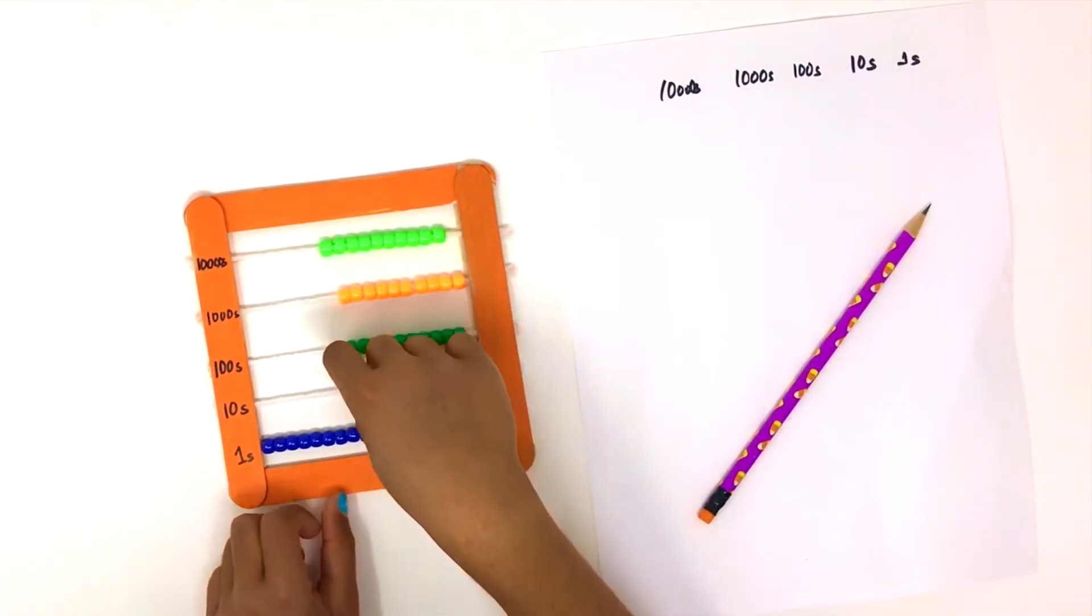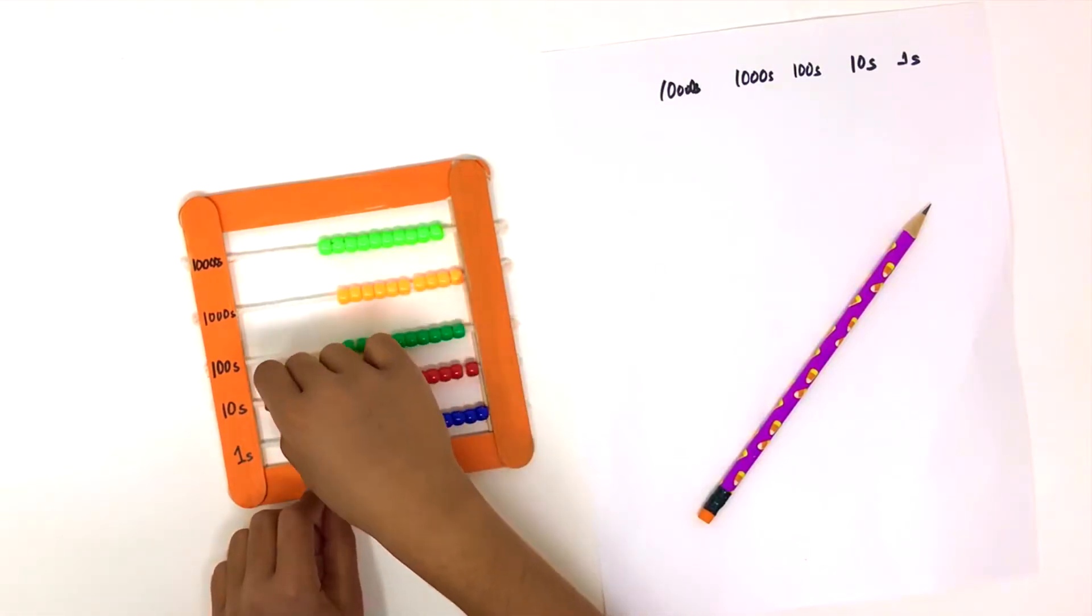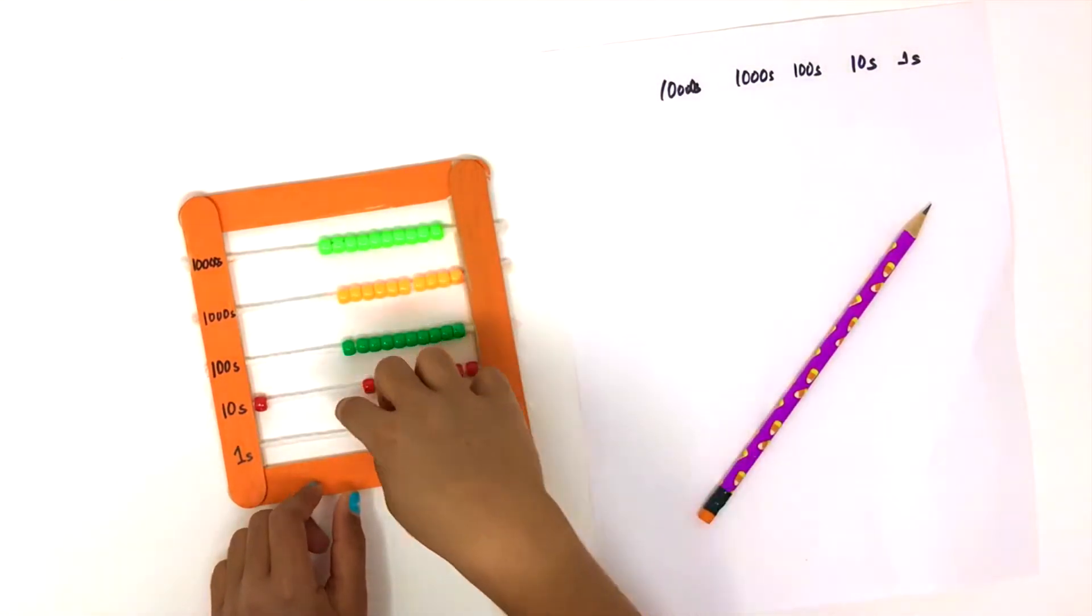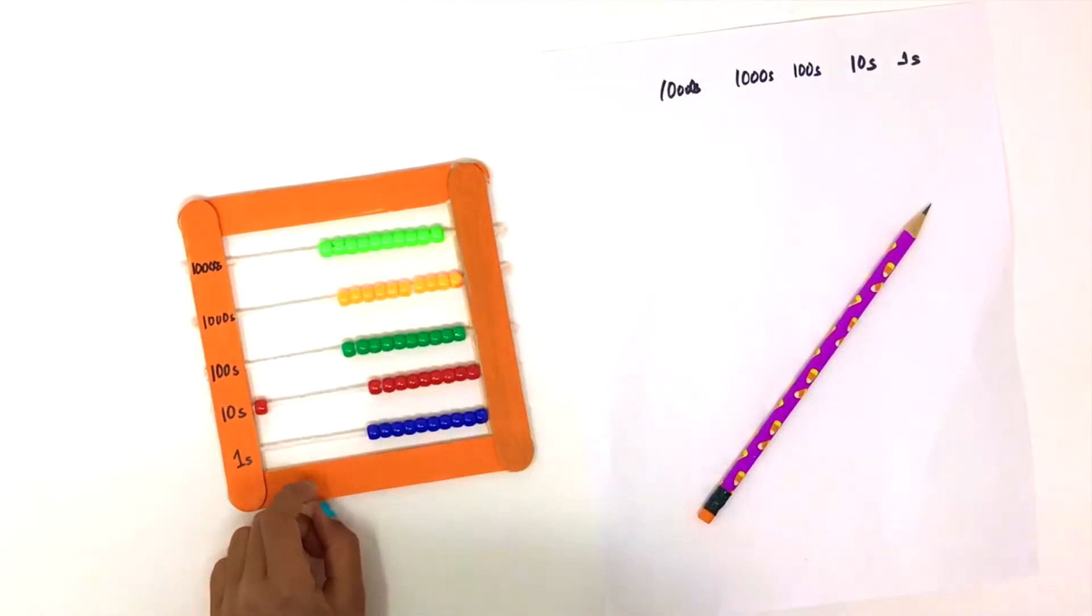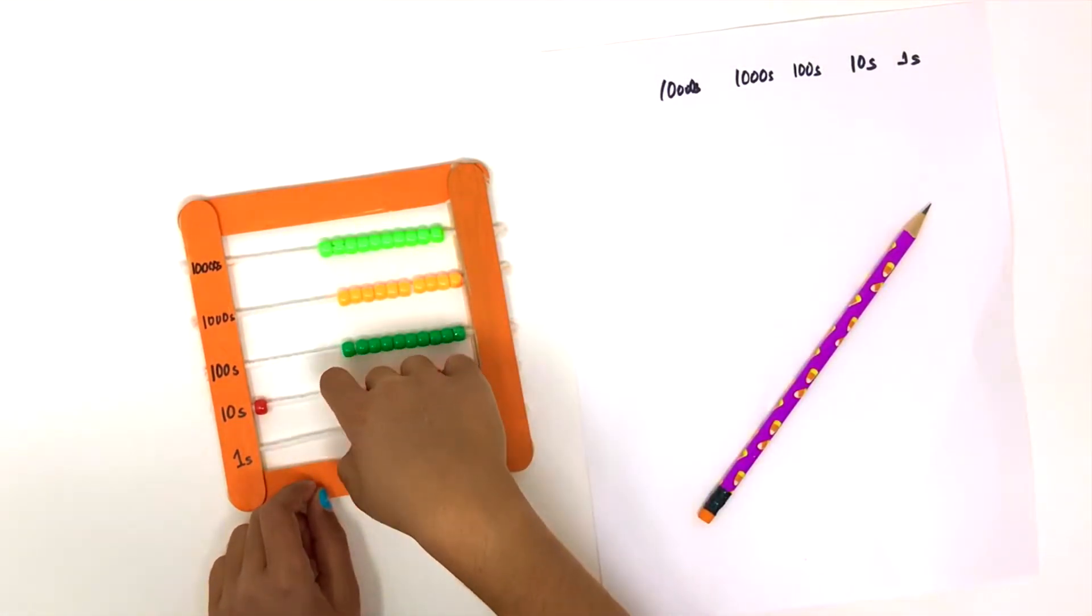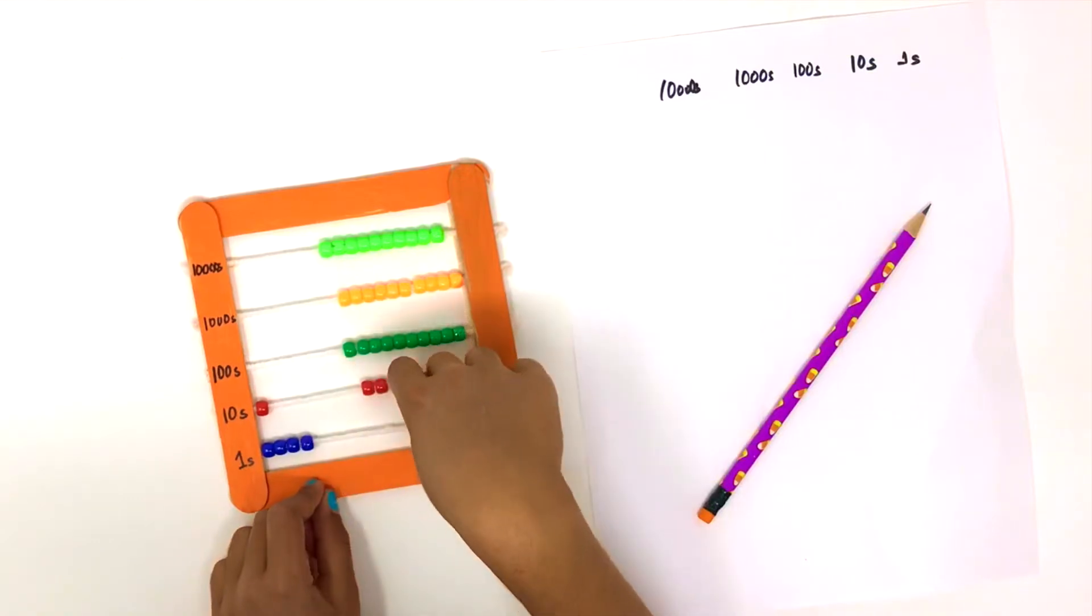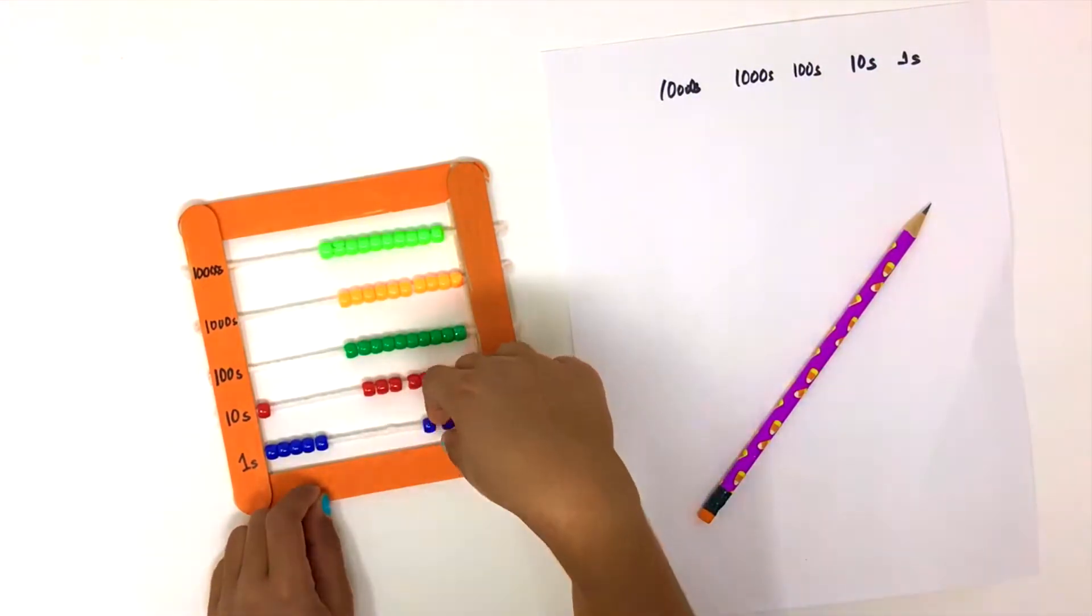So we are going to push all the blue beads in the ones place to the right, and we are going to push 1 bead to the left in the tens place. We counted 2 out of 8. So let's start counting after the number 2, which is 3, 4, 5, 6, 7, and 8.